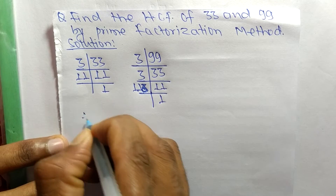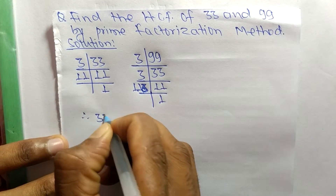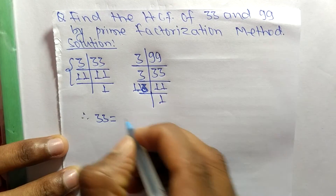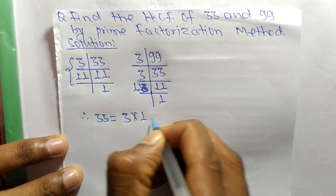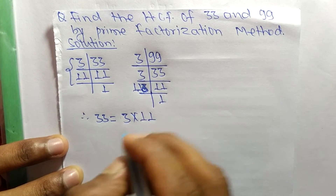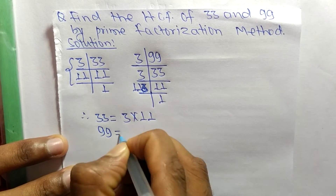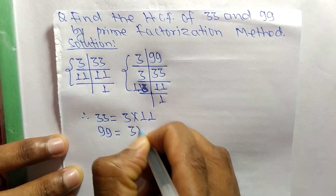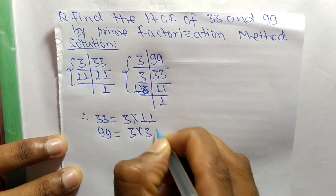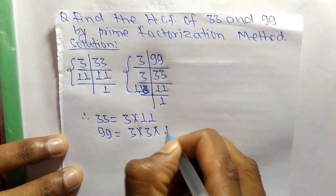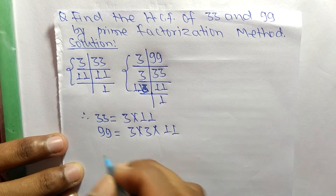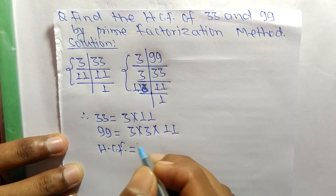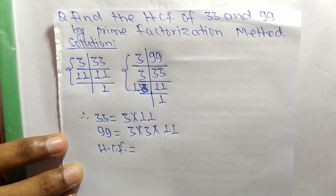From these prime factors we can write: 33 is equal to 3 times 11, and 99 is equal to 3 times 3 times 11. Now we find the HCF.